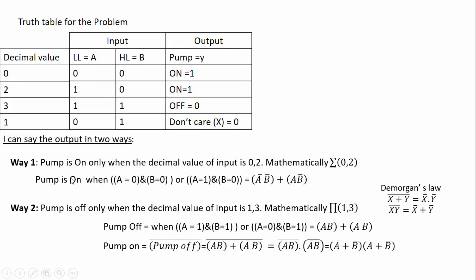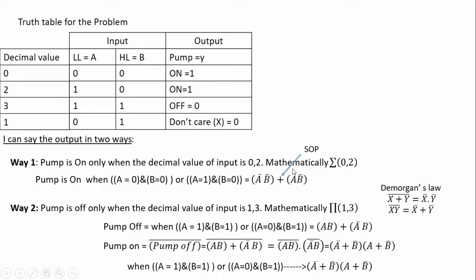For finding the pump-on expression I got two expressions. The first expression — A-bar·B-bar + A·B-bar — is the sum of products. The second expression — (A-bar + B-bar)·(A + B-bar) — is the product of sums. In the first way, I am focusing on the logic high outputs. For pump on, I identify minterms: when A=0, B=0 → A-bar·B-bar is a minterm; when A=1, B=0 → A·B-bar is another minterm.